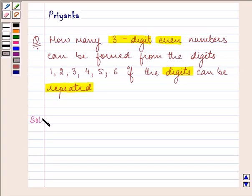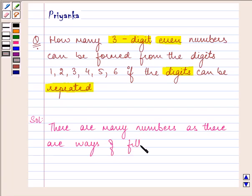Now let us start with our solution. There are many numbers as there are ways of filling digits in the three vacant places.